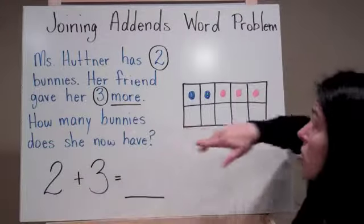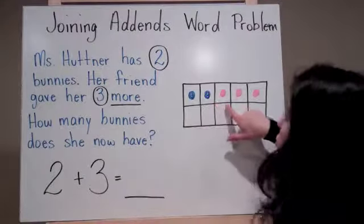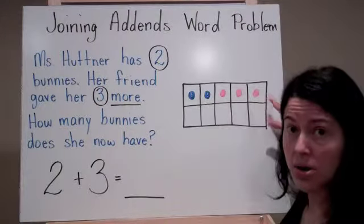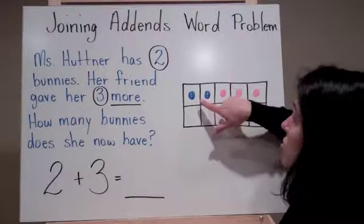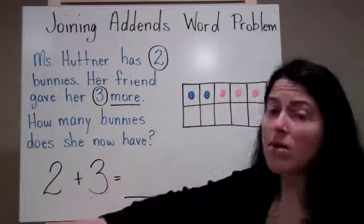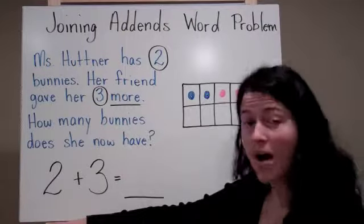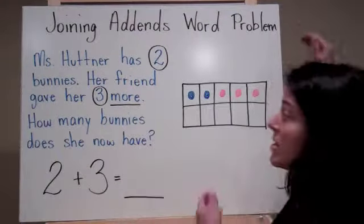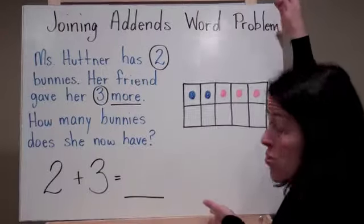So now I'm going to draw it on my tens frame. Here are the first two bunnies that Mrs. Hutner started with. Here are the three bunnies that her friend gave her. So now I can look at my tens frame and I know that Mrs. Hutner has five bunnies. So two plus three equals five. That's how the tens frame can help with word problems.